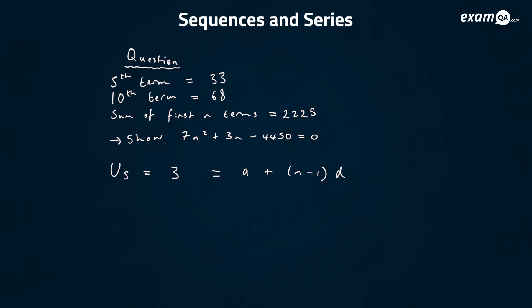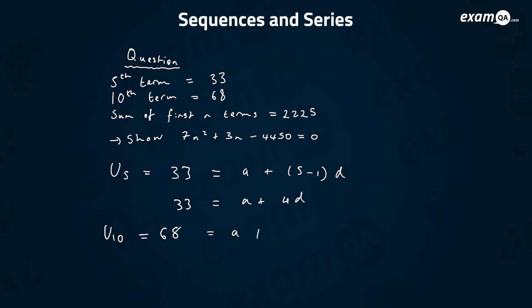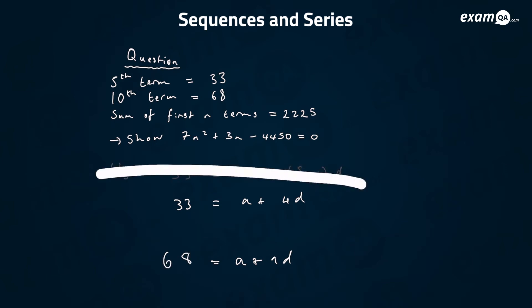So the fifth term — when n equals 5 — gives us 33 equals a plus 4d. They also say the tenth term equals 68, which gives a plus (10 minus 1)d, so a plus 9d equals 68. So here I've got two simultaneous equations which I can solve.